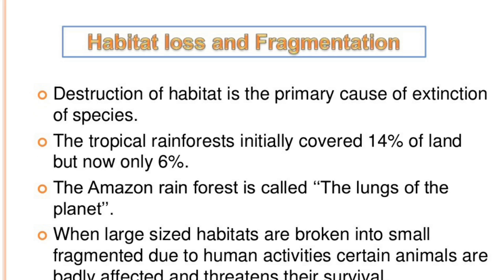Habitat loss and fragmentation: destruction of habitat is the primary cause of extinction of species. The tropical rainforest initially covered 14 percent of land, but now only 6 percent remains. The Amazon rainforest is called the lungs of the planet. When large-sized habitats are broken into small fragments due to human activities, certain animals are badly affected and their survival is threatened.